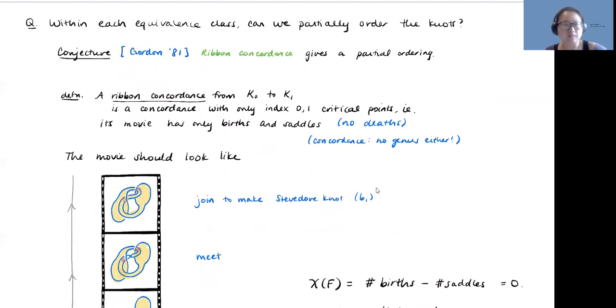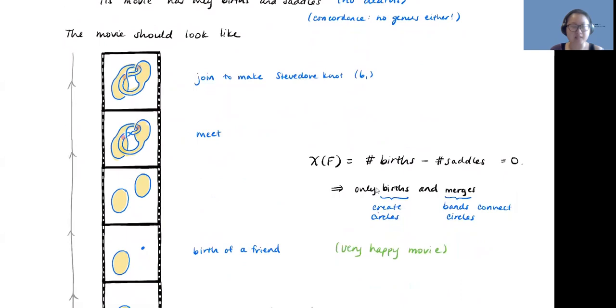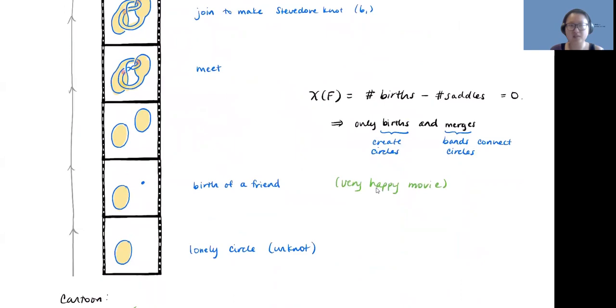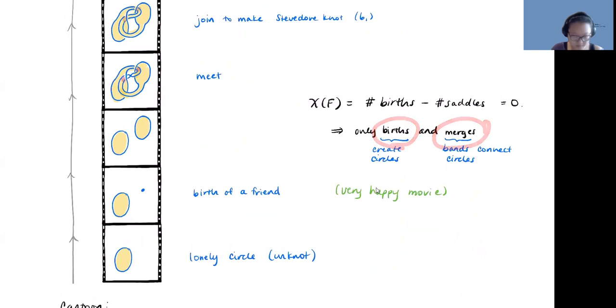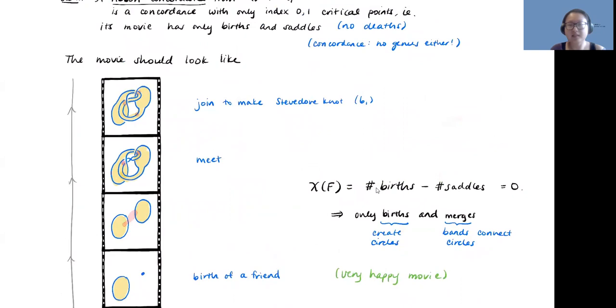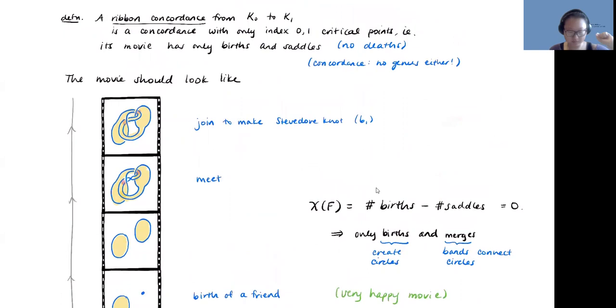So here's the motivation for the question. Within each equivalence class, could you possibly partially order the knots? So are some of them more complicated? Gordon conjectured in 81 that ribbon concordance gives a partial ordering, and I'm about to tell you what ribbon means. So if you think about it, the unknot is very, very simple. But there are all these other knots that are also concordant to it, but they're clearly more complicated than the unknot. So we want to get some sort of relationship, some sort of ordering. So a ribbon concordance, the way that I'm going to think about it, is just that it's a concordance such that when you draw the movie, it's very happy. So what I mean by happy is that it can only have births and merges. So circles are born, and then they meet up and they become friends. This is as opposed to having deaths and splits. So ribbon concordance is a happy movie.